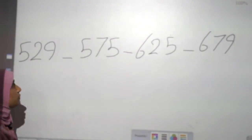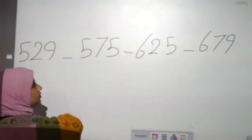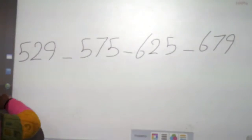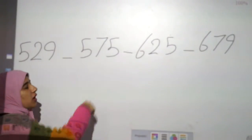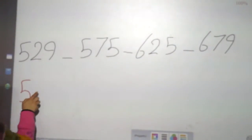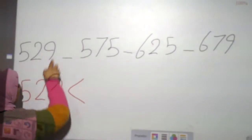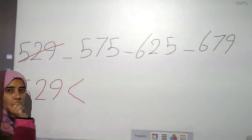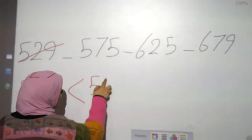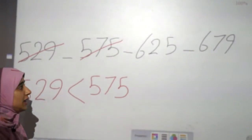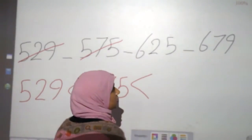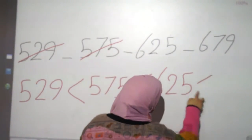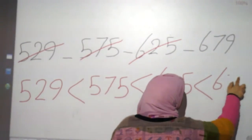I want to start with the small number. Here 500 and 500, 600 and 600 — the small ones are the 500s. Which one of the 500s? Here 29 and here 75 — where is the small? Excellent, 529 is the small one. Now 500, 600, 600 — the next small is the remaining 500. Then 600 and 600: small is 625, so the big one is 679.